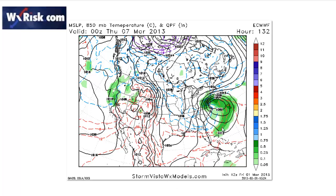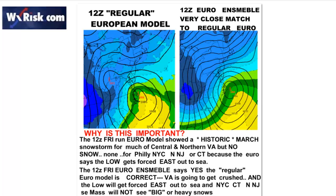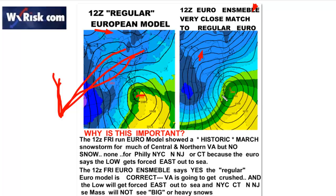Here's the afternoon European. The system goes kablooey, parked off the Delmarva Coast — huge amounts of snow coming in. You can see the tremendous snowfall amounts. Notice no snow in New England — because the system goes this way. Now we compare the regular European to the ensemble: the low is here, and there's the ensemble. Yes — bingo, we have a match. This is a lot of potential snow all up into this area.